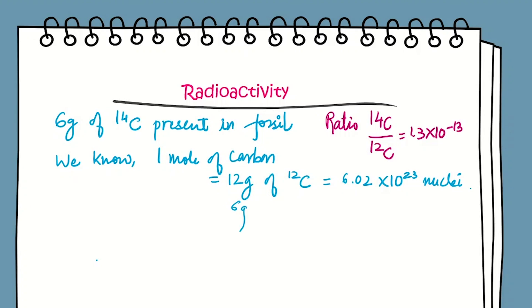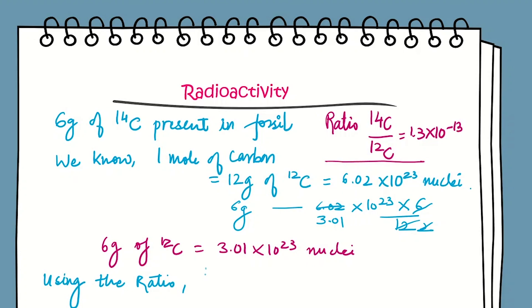We have to find this for 6 grams, so we apply the unitary method. This is 6 divided by 12, which is half. So 6 grams of 12C carbon is equal to 3.01 × 10^23 nuclei.